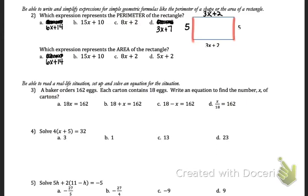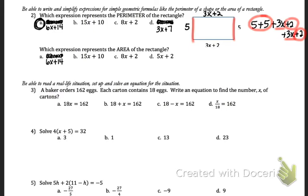For perimeter, we add all sides: 5 plus 5 plus 3x plus 2 plus 3x plus 2. Combining like terms, the only x terms are the two 3x's, which add up to 6x — and looking at the answers, only answer A has a 6x. To confirm the constants: 5 plus 5 is 10, plus 2 plus 2 is 14. So perimeter is 6x plus 14. For area, we multiply the two sides: 5 times (3x plus 2). Distributing, 5 times 3x gives 15x — and right away the answer must be B since it's the only one with 15x. The 5 times 2 also gives us the 10 in answer B.